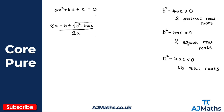Referring back to the quadratic formula, if the discriminant b squared minus 4ac is less than zero, then b squared minus 4ac is negative, which means we're trying to take the square root of a negative number. If you put the square root of a negative number into your calculator, it returns an error — a maths error or just error. So there are no real solutions, but we can find solutions in all cases by extending the number system to include the square root of minus one.